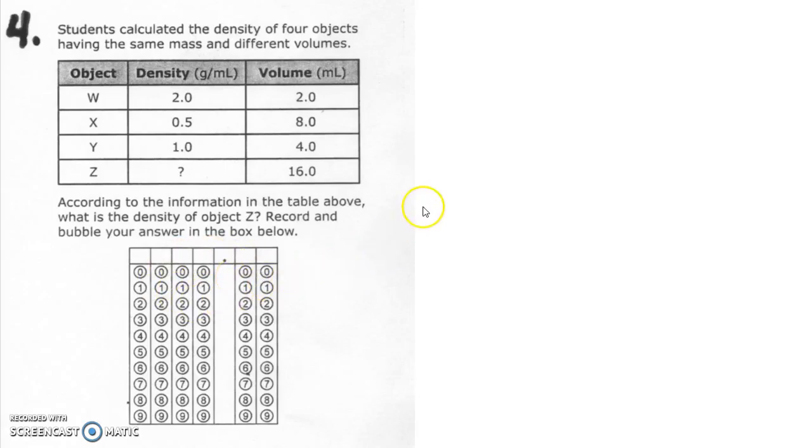You don't know what the mass is, but they were all the same mass. So you just have to take a look. Density is mass divided by volume. So some mass divided by 2 equals 2.